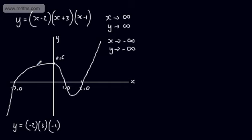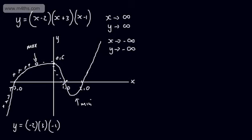As x → +∞, y → +∞, and as x → -∞, y → -∞ — confirming it's a positive cubic. We have three distinct real roots at x = -3, x = 1, and x = 2. The sketch should show the general cubic S-shape passing through all labelled intercepts and exiting correctly from each quadrant.